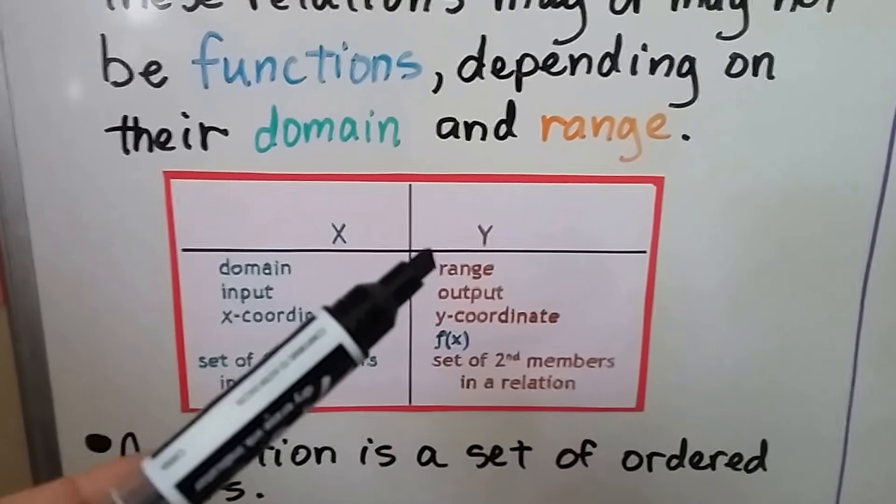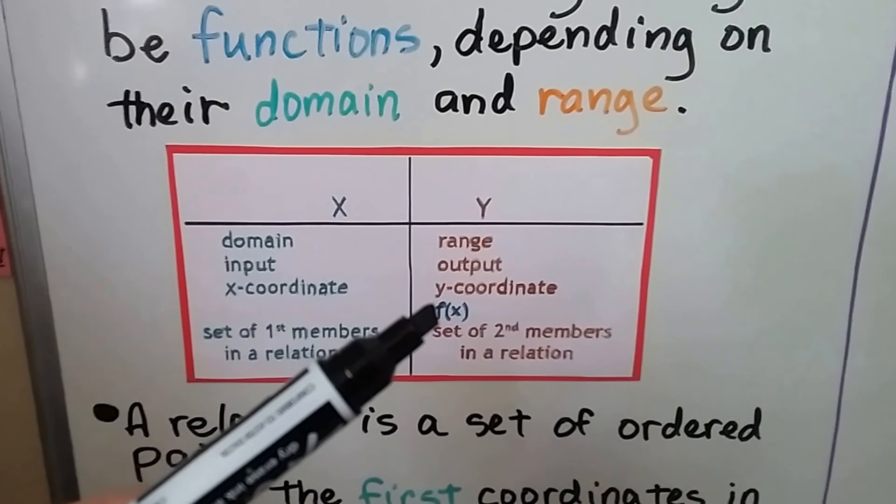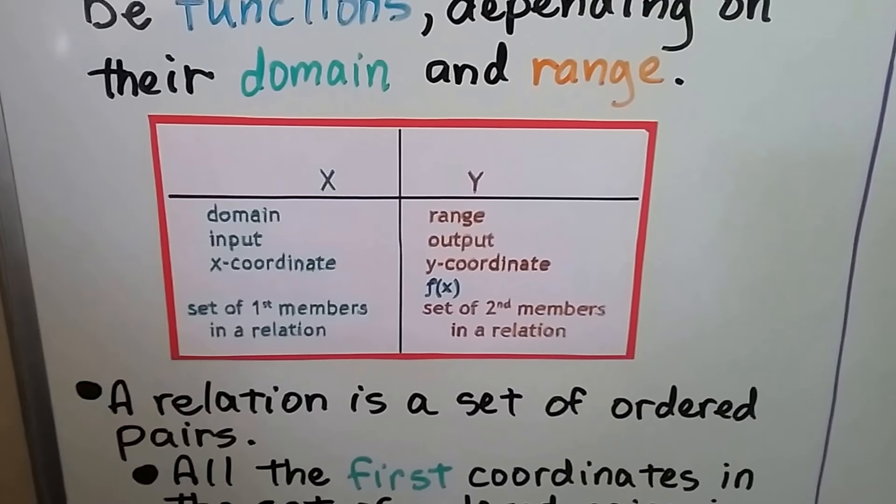And the y values are the range, the output, the y coordinate. They're the f of x, the function of x, and they're the second members in a relation.